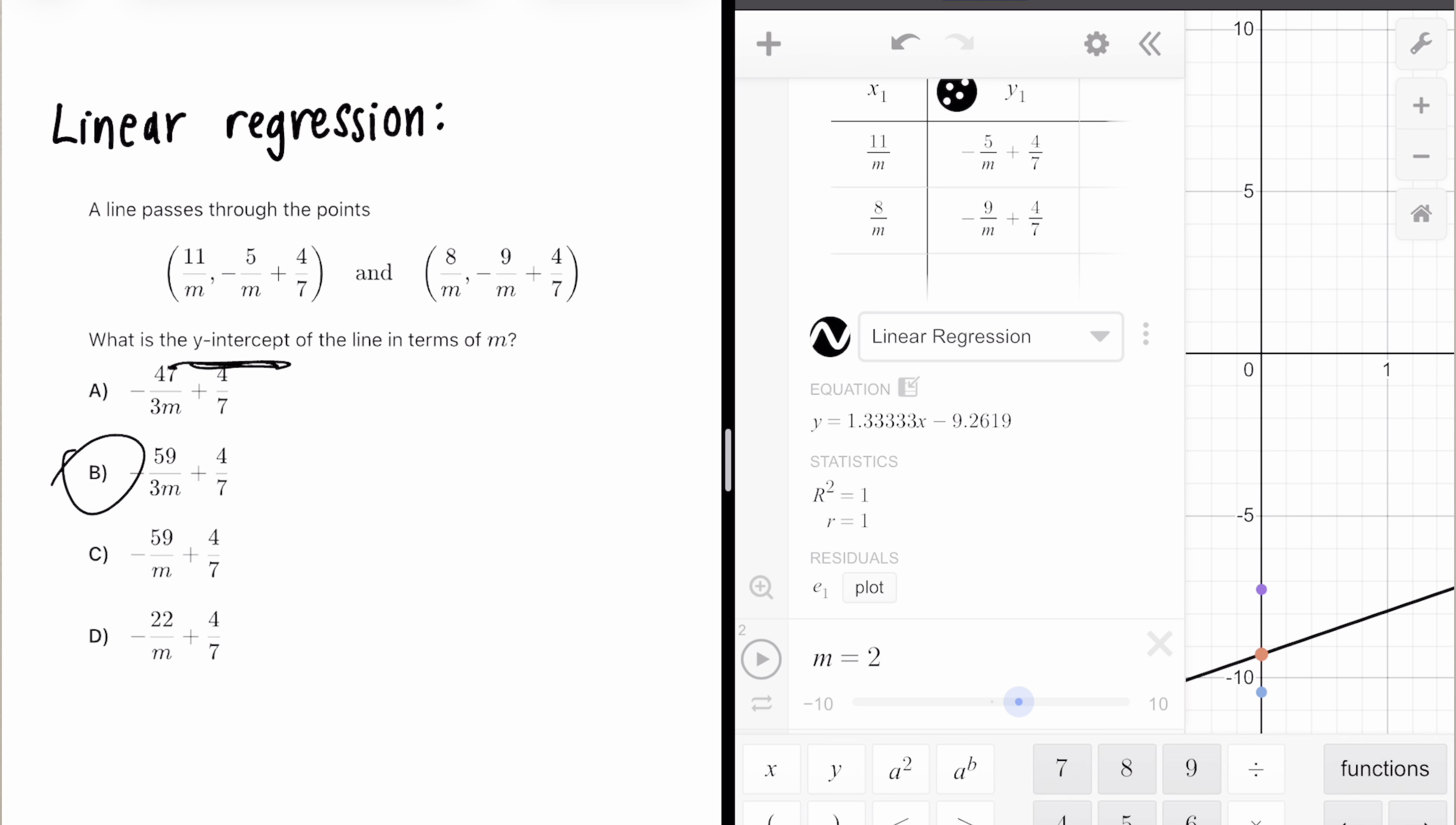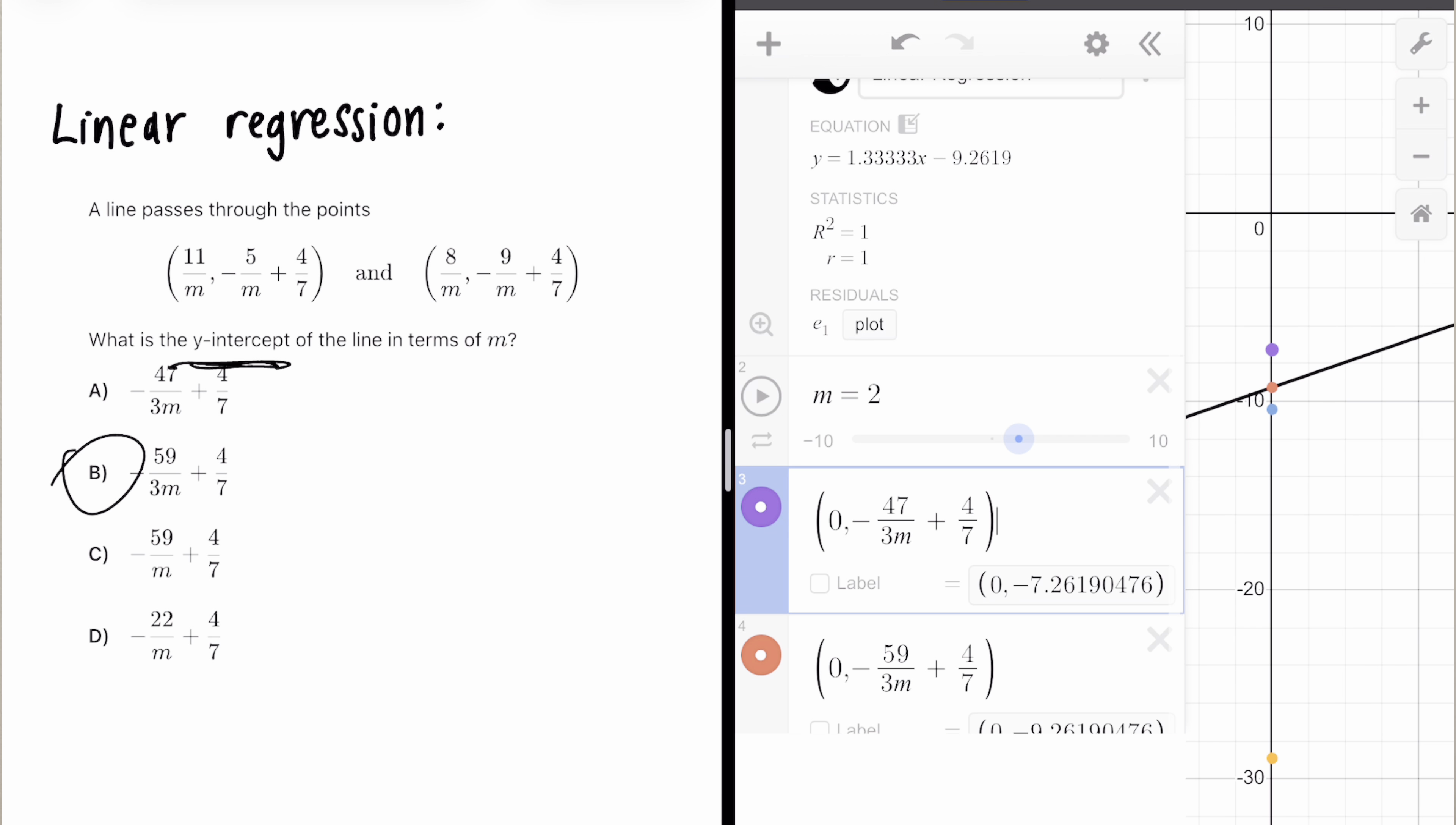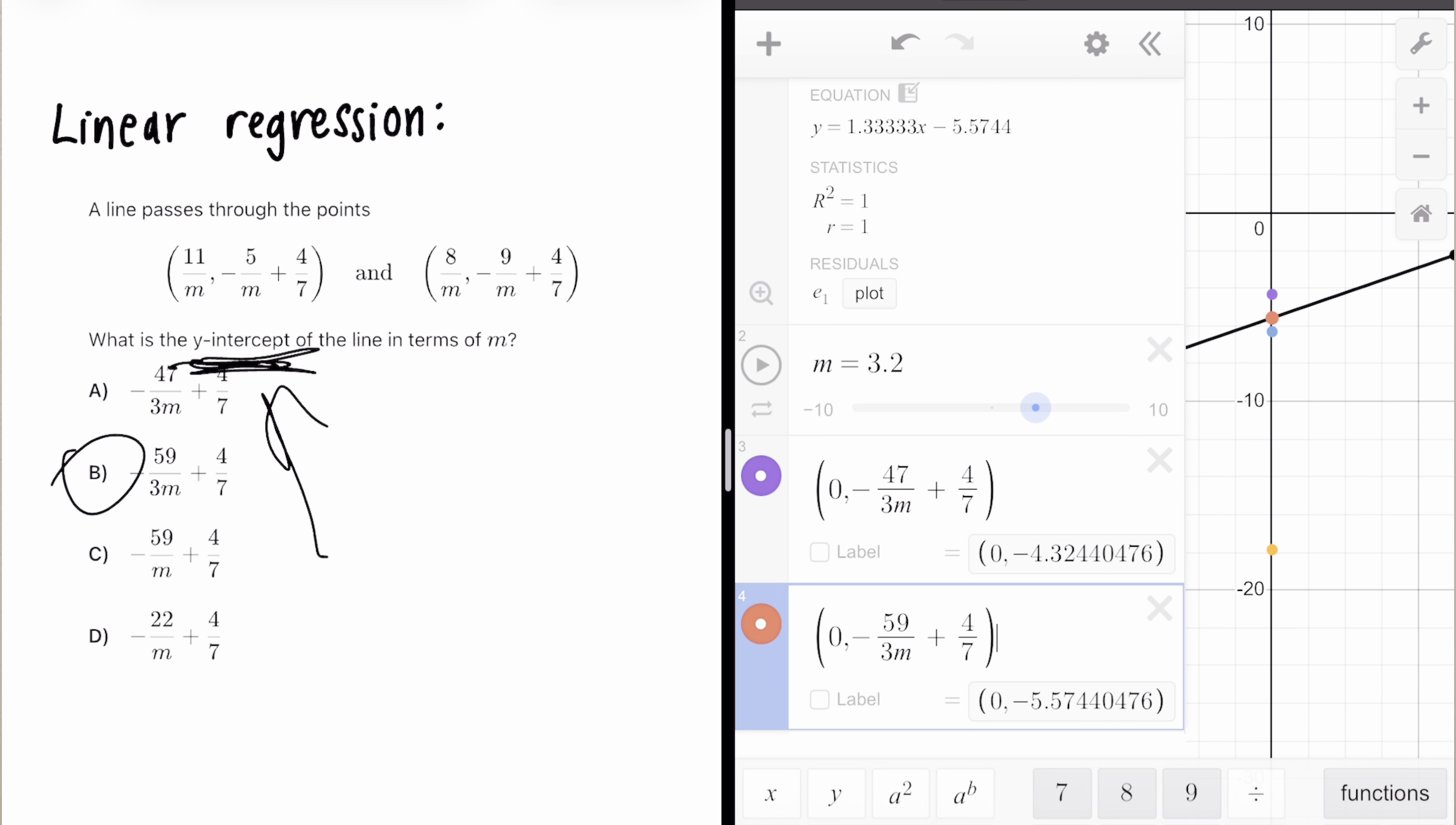So real quick, let's recap. We made a table. We plugged in the two points that we were given. We defined m by using a slider and then we pressed that regression button. Let me show you one more time. This regression button to graph the line that we want. After we entered A, B, C, and D as points, we can see that only one of them is the correct answer because only one of them sits on the y-intercept at every single value of m, which is answer choice B.